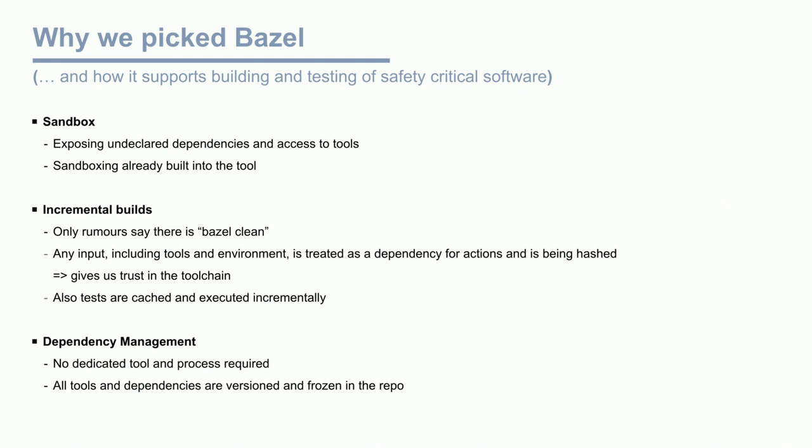Except for developers of rules, of course — they still need to do it regularly. For that, we use the output_user_root flag on the command line to point temporarily to another place where we can run our build and test the rules.